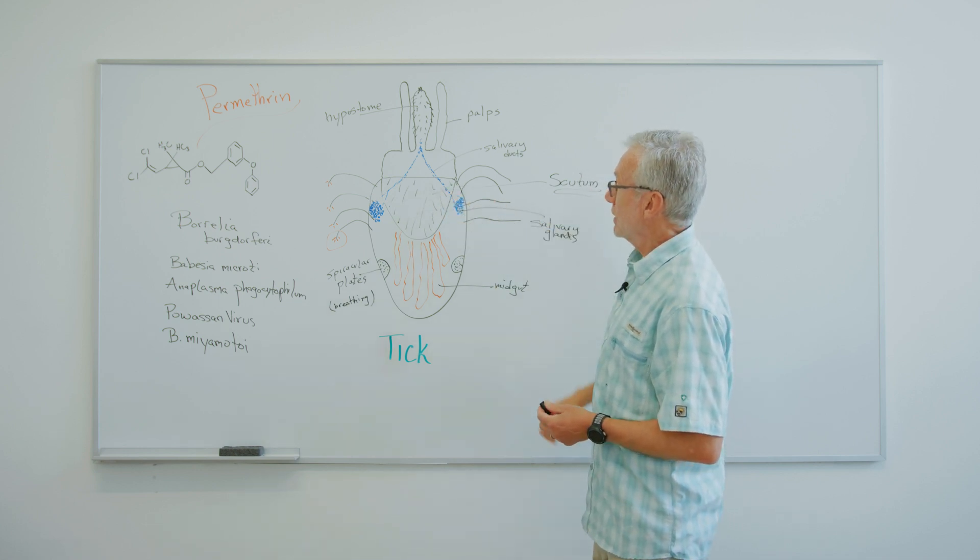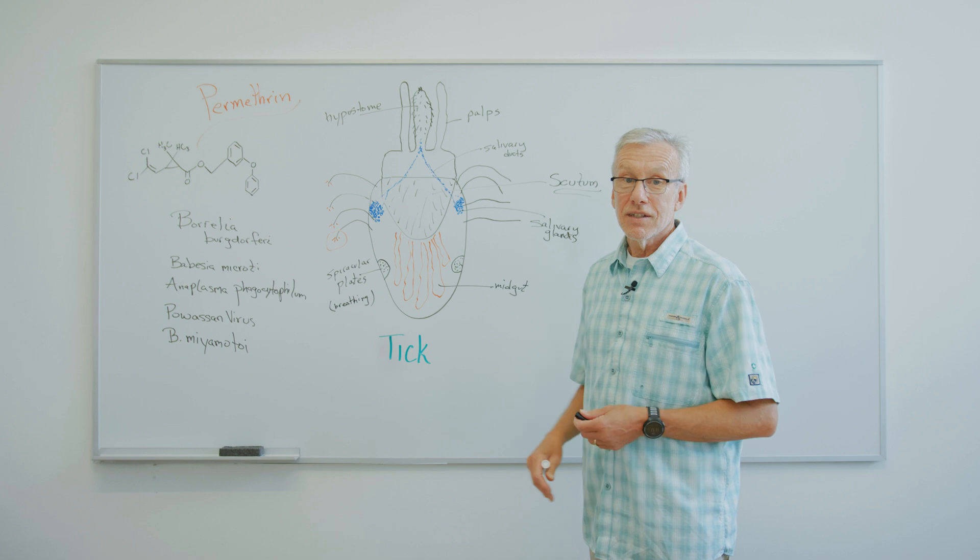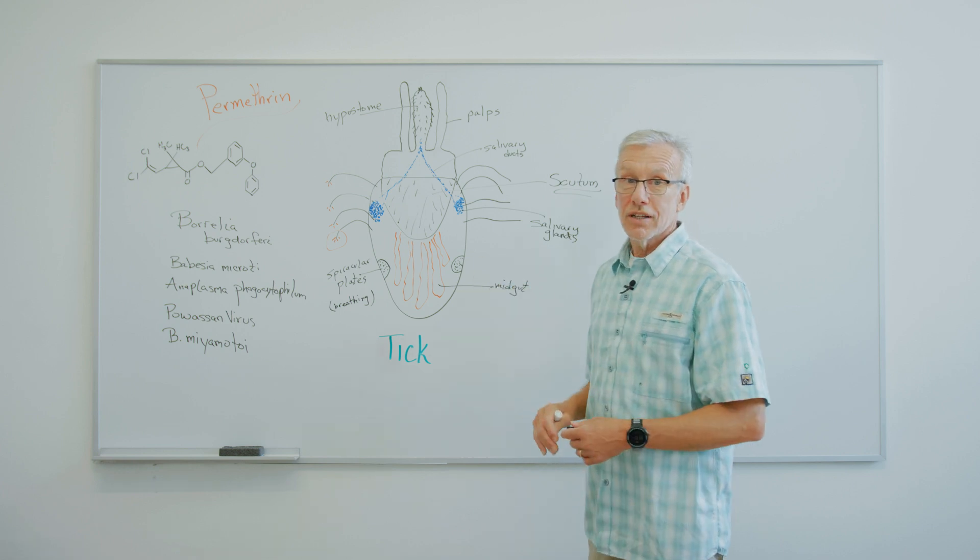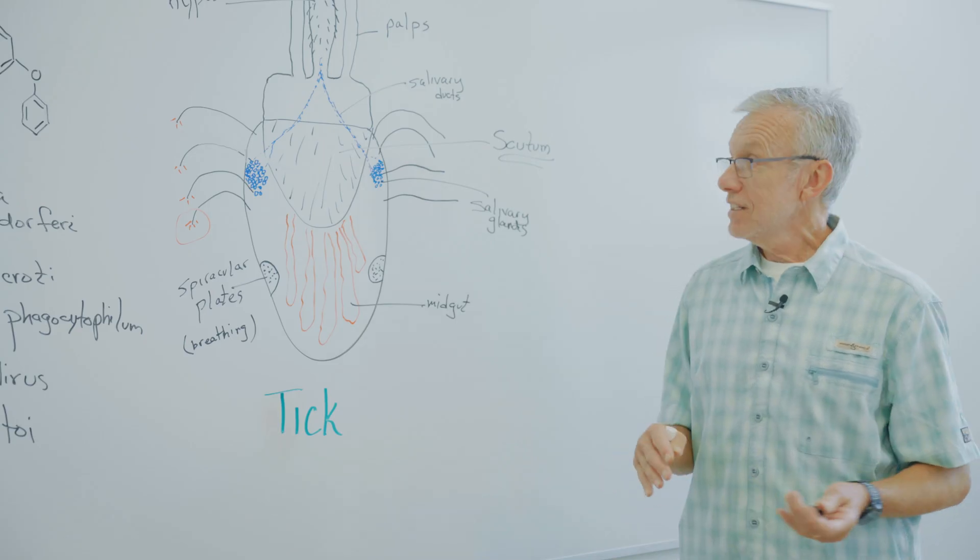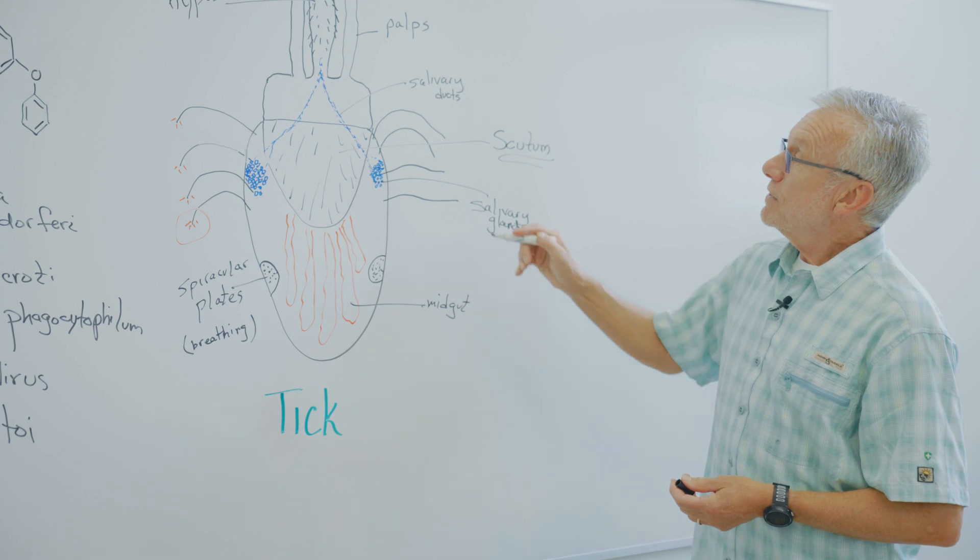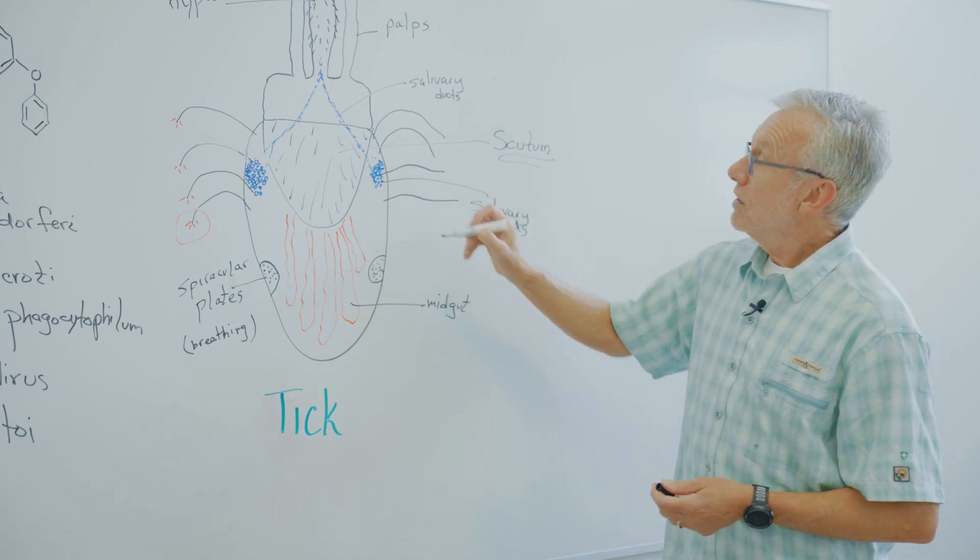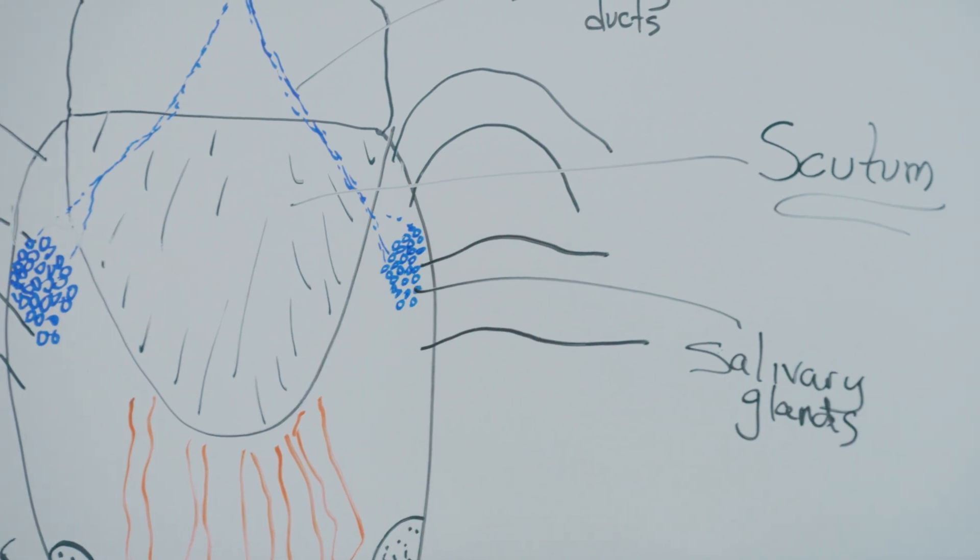But the female tick can't have a shield on its whole body because it wouldn't be able to engorge, like, take enough blood so that it can lay eggs. Some of the other great features that are important are these things called salivary glands. This is where the germs are.